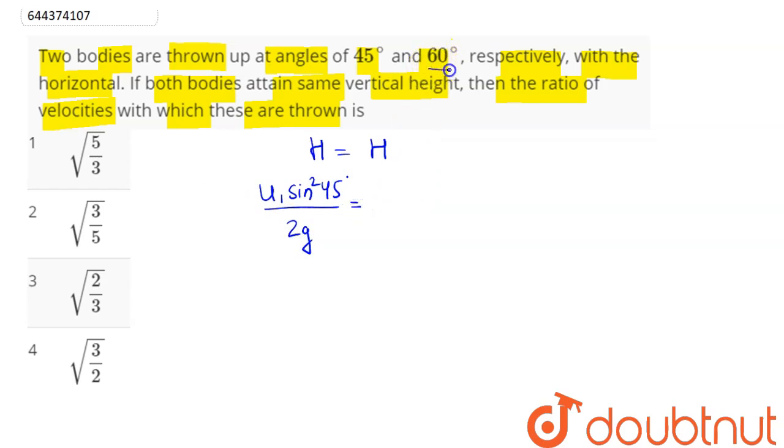Same as for 60 degree, this can be written as u2 squared sine squared theta divided by 2g. So we can say here 2g, 2g portion cancels out.